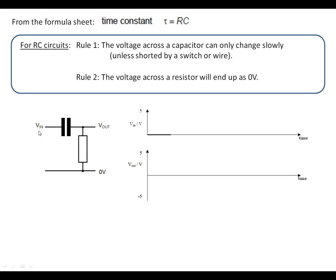So using these rules, if we're saying we've got 0 volts here to start with and we've had a decent amount of time, this will be 0 volts at V out.